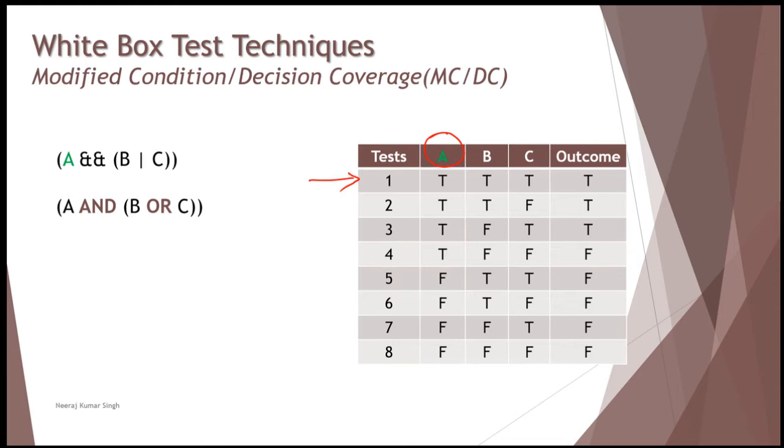Now let's figure out which one of the other tests is having a flip on the condition A, and has a different output. So if we compare with test number five, you see that there is a different outcome if A is flipped. So here A is otherwise false, and B and C remains true, thus the outcome is false. So now one and five is a good test case for us as a pair to be executed.